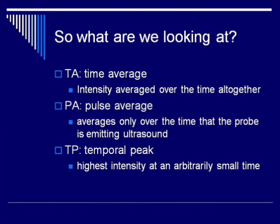The other set of acronyms describes the temporal component, with three options: TA for time average, PA for pulse average, and TP for temporal peak. Time average is intensity averaged over the entire time the probe is on — because duty factors are usually low, this number will be very low. Pulse average averages only over the time the probe is actually emitting ultrasound, so this number will be significantly higher. However, even over the course of a pulse the amount of ultrasound emitted changes, which leads us to temporal peak — the highest intensity seen at any time during the pulse.